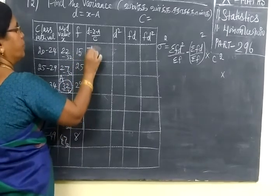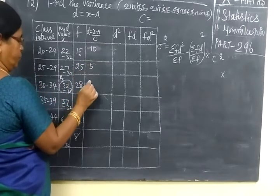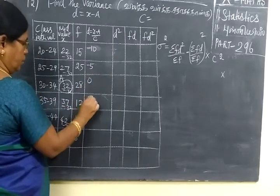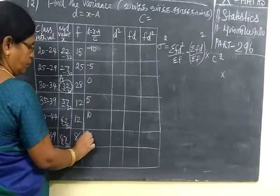So 22 minus 32 is minus 10, then minus 5, then 0, then 5, then 10, then 15.